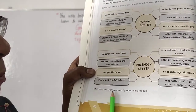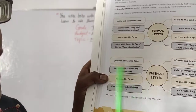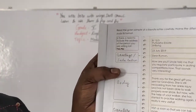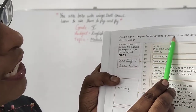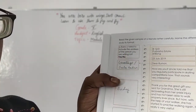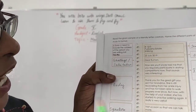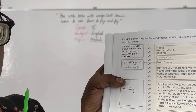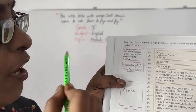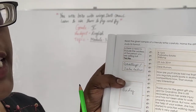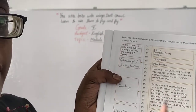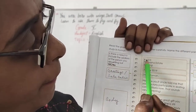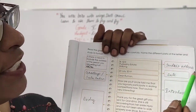Let us practice writing a friendly letter. Read the given sample of a friendly letter carefully, name the different parts, and study its format. Is there a need to include the address of the person you are writing to? Yes — when the letter goes by post, both the sender's and recipient's addresses are very important. The sender's address is written at the top.